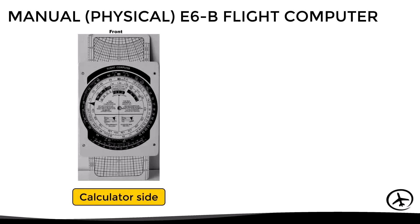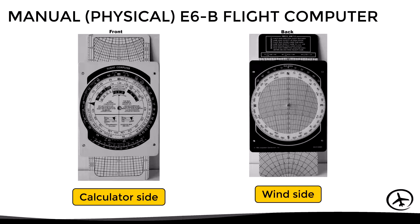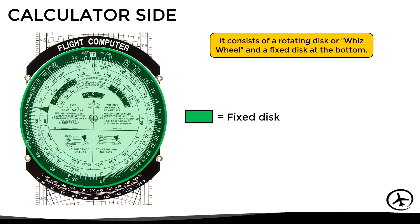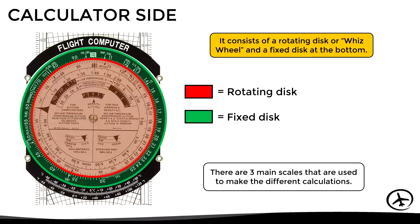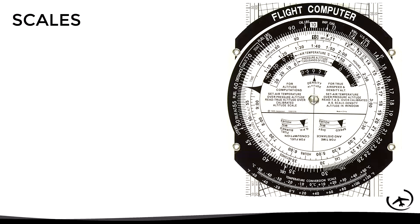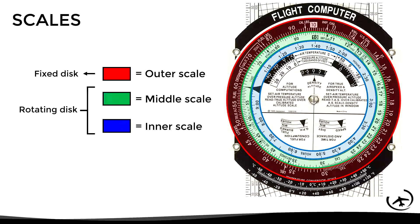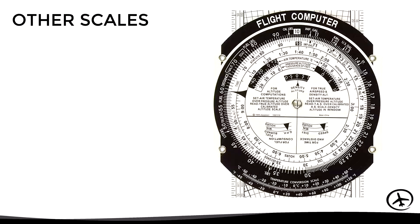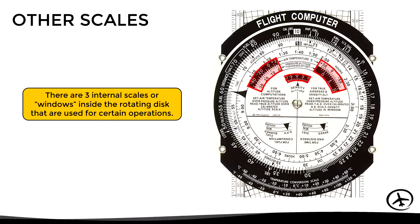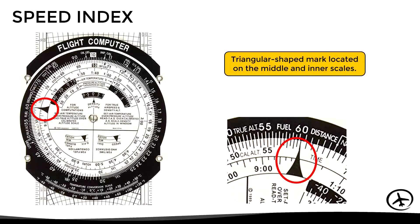This device has two sides: the calculator side and the wind side. The calculator side is used for most calculation problems, while the wind side is used exclusively for wind problems. The calculator side consists of a rotating disc, also known as the whiz wheel, and a fixed disc at the bottom. It has three main scales: the outer scale on the fixed disc, and the middle and inner scales on the rotating disc. There are also three internal windows inside the rotating disc used for certain operations, as well as special markings such as the speed index — a triangular mark on the middle and inner scales representing the number 60.